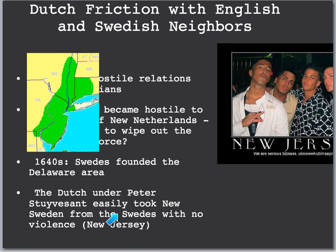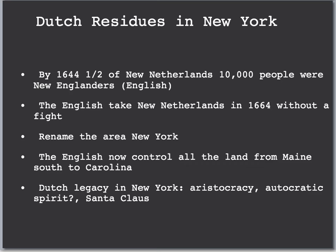What later became known as New Jersey was temporarily a part of New Netherlands. By the year 1664, half of New Netherlands — about 10,000 people — were actually New Englanders who had come down into their land. The English decided to take New Netherlands in 1664, also without a fight, and they renamed it New York. After the removal of the Dutch, England now controlled all the land from Maine down to the Carolina region. Georgia doesn't come along until 1733. Even though the Dutch were forced out by the English, they still left a legacy — many aristocrats still had wealth and power, which led to an autocratic spirit of less democracy in New York, especially compared to their neighbor Pennsylvania.